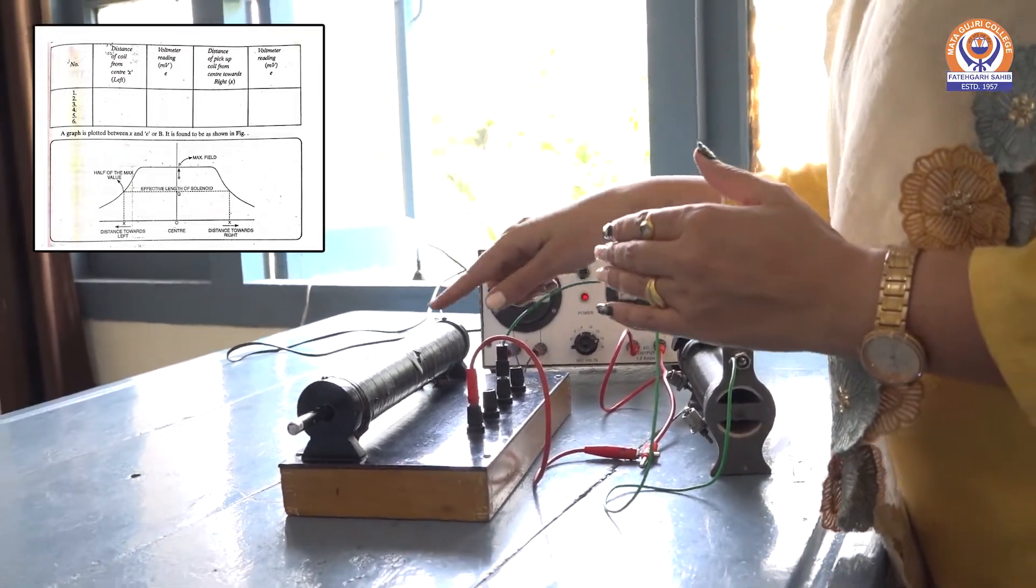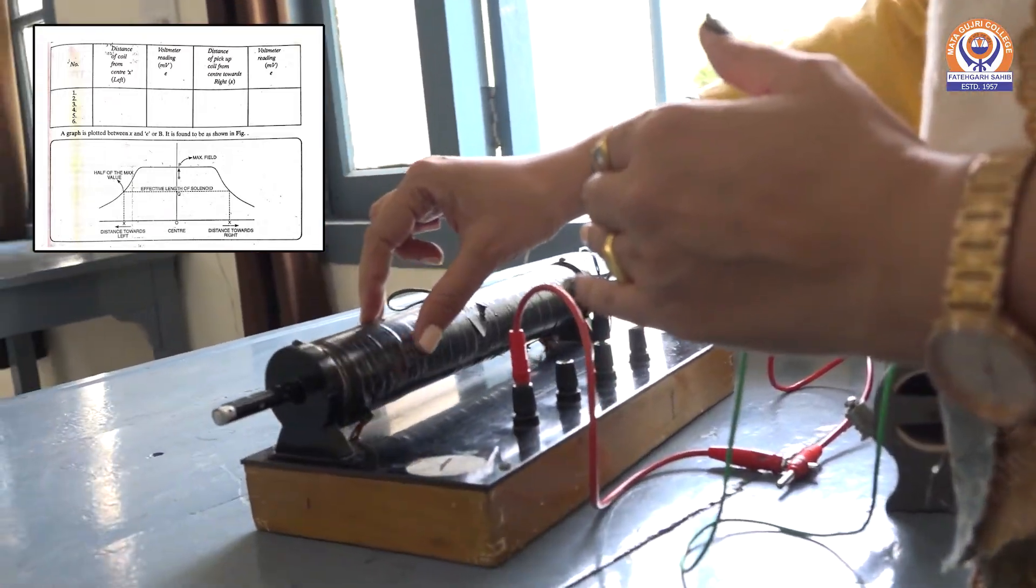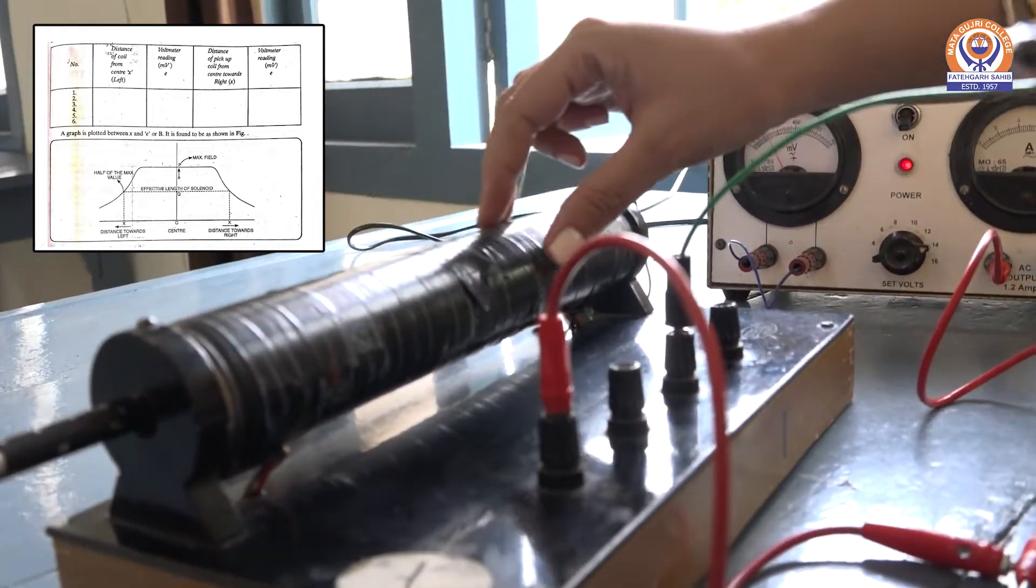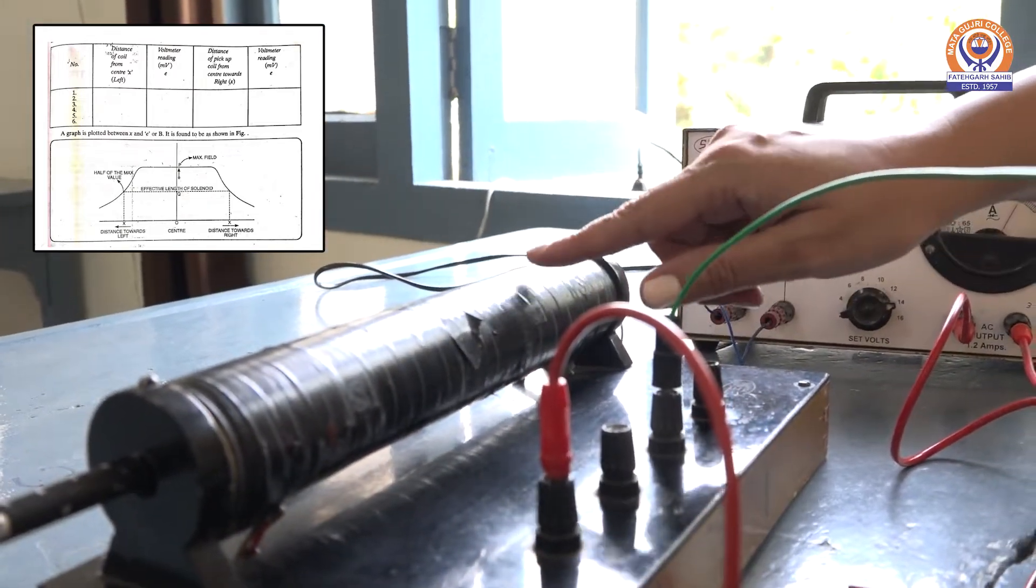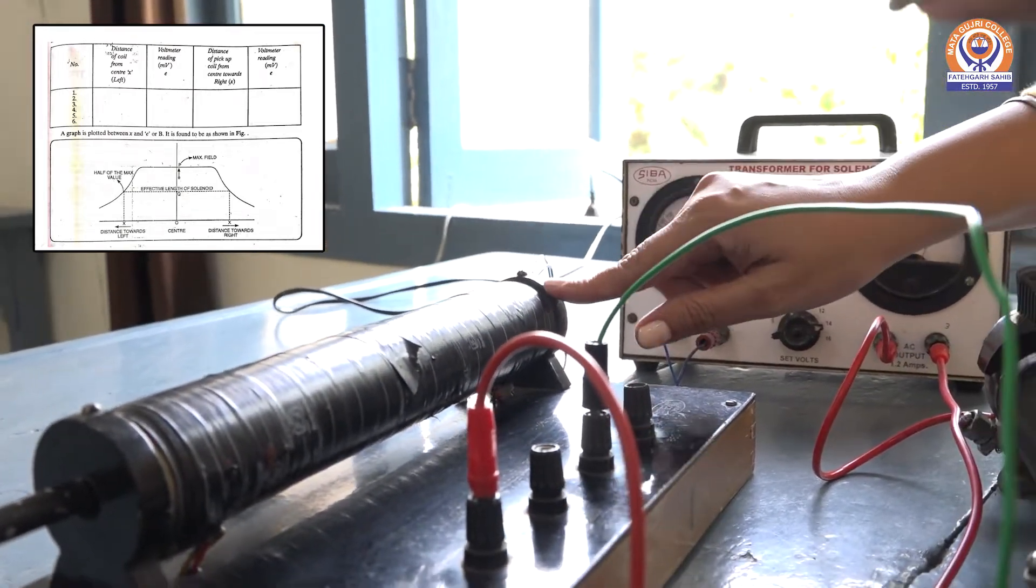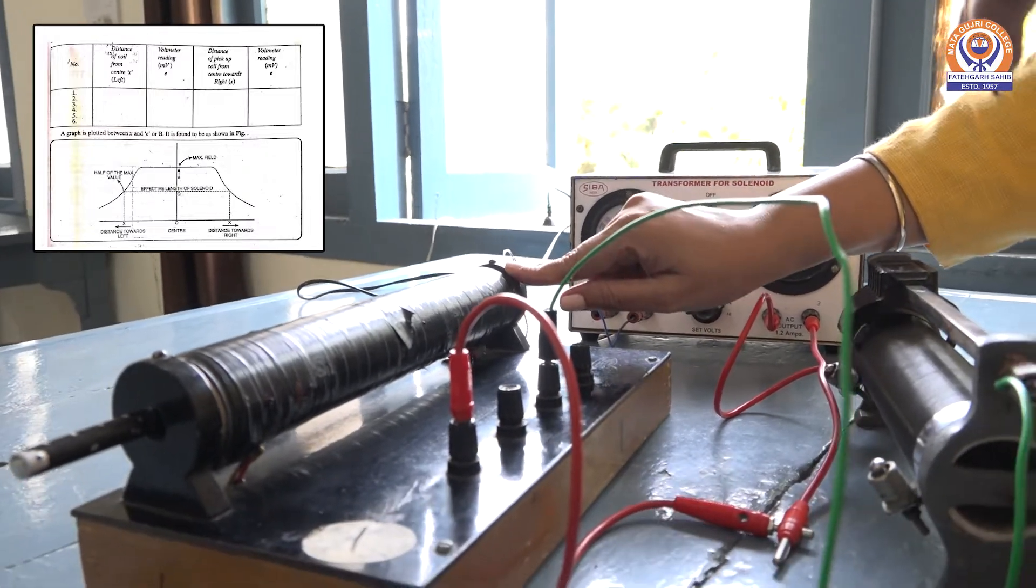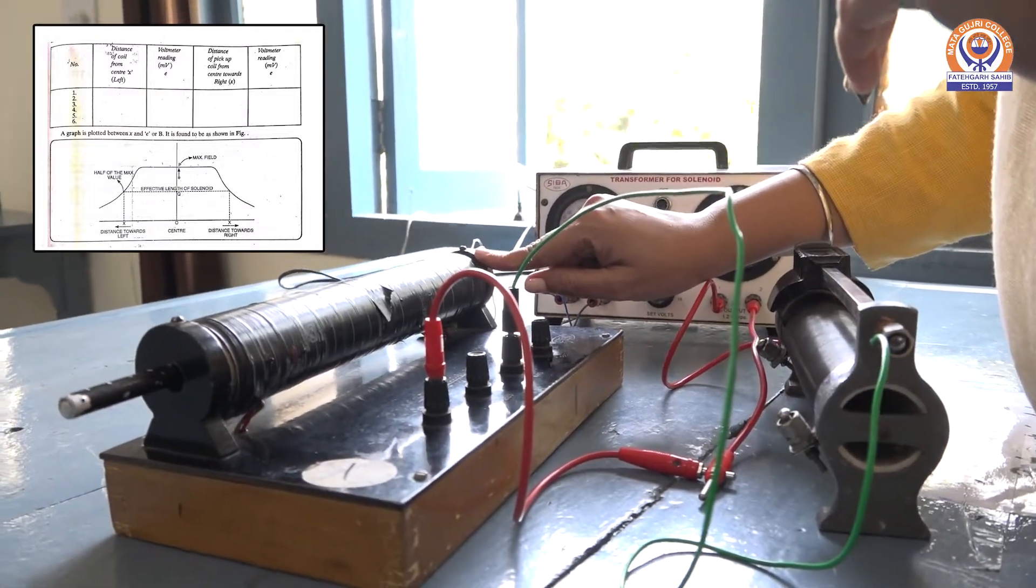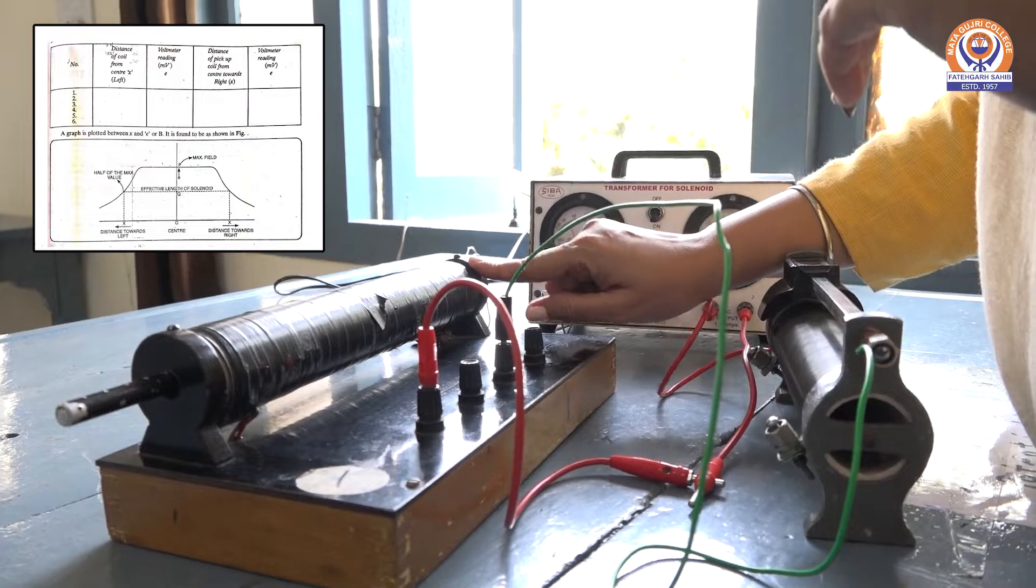So we have seen that magnetic field inside the solenoid is uniform and it keeps on decreasing when it moves towards end points, and it is half at the end point. That is, B equals mu naught n i by 2.